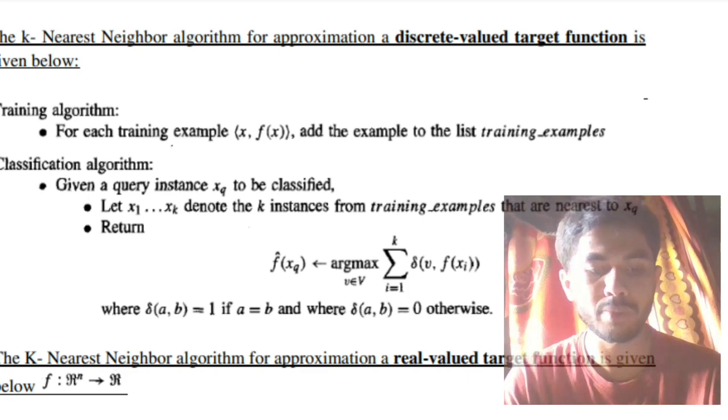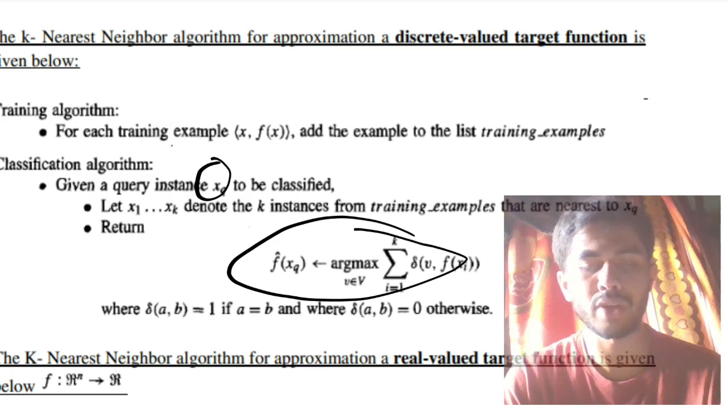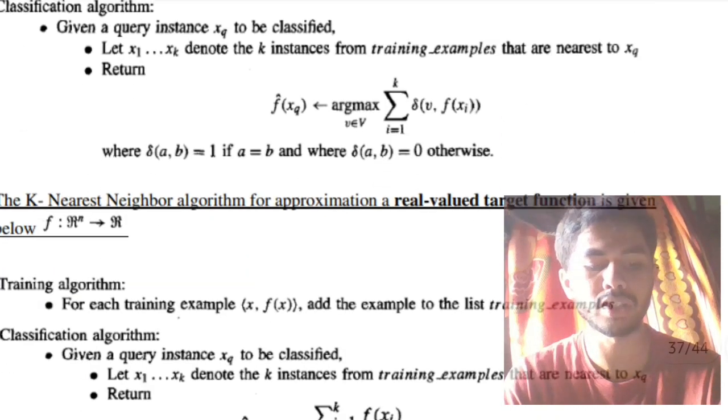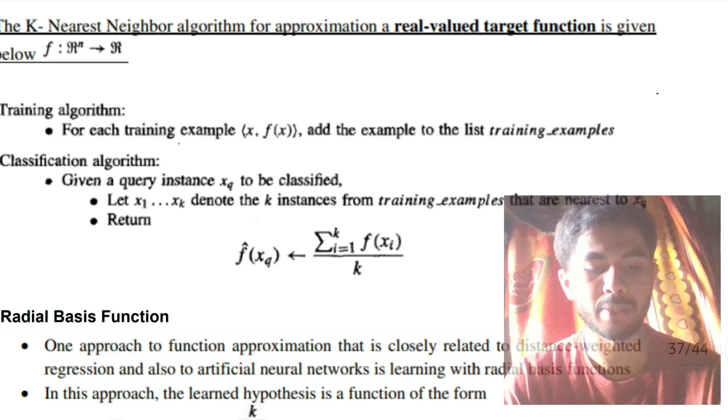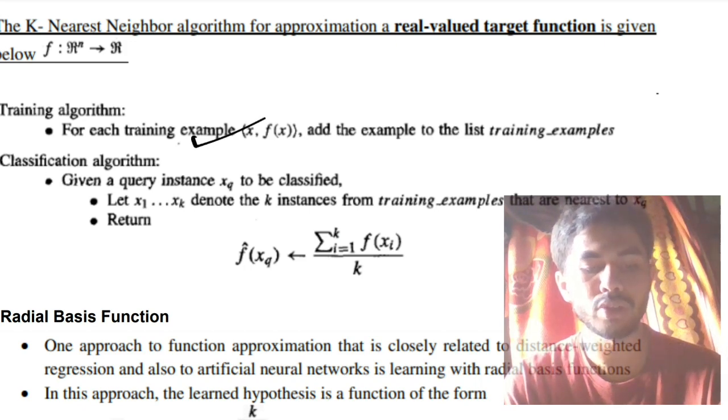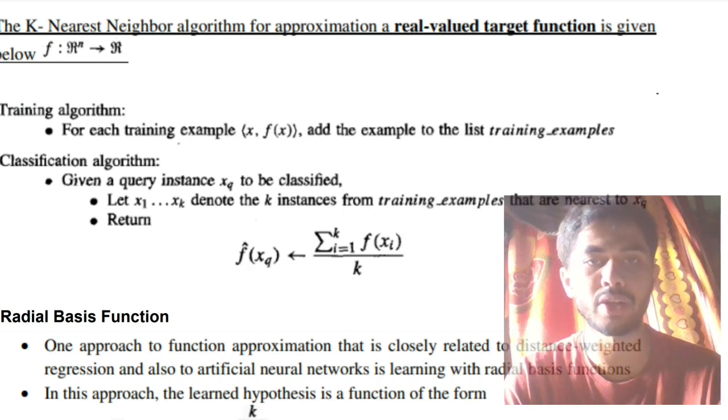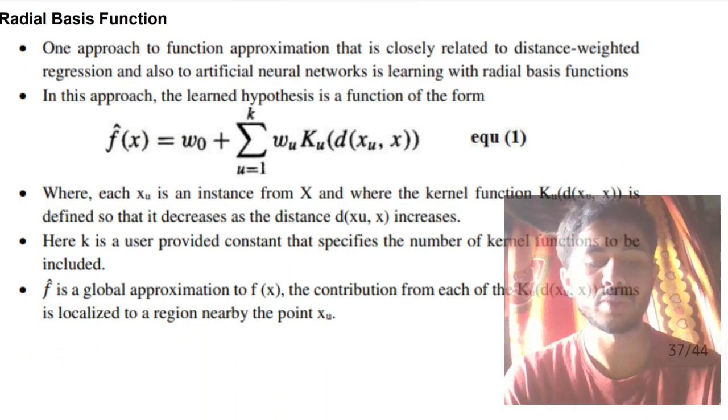The classification algorithm starts from considering a new instance xq which has to be classified, and will be using this formula for calculation. For more information, watch the theory video, in that I have explained using an example as well. The same goes for the real-valued also. The training example is the same, and you will be using this formula for real-value training examples. That was about KNN.